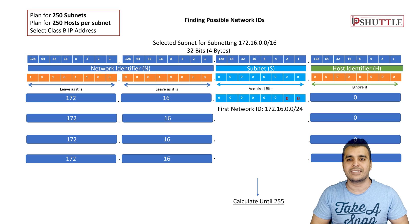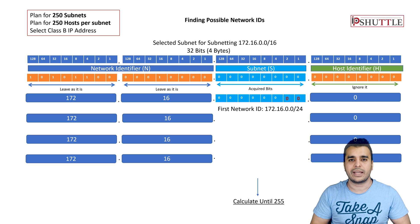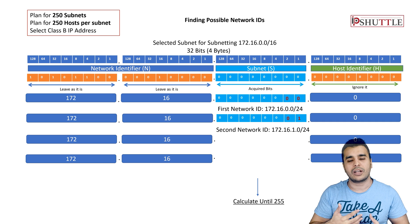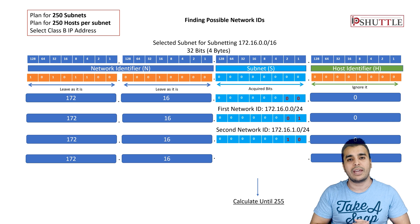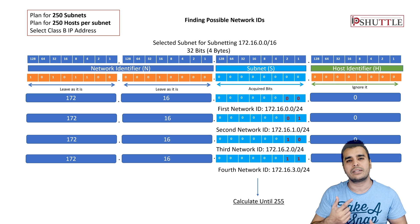The /24 comes from counting all bits that are part of the network identifier: first octet (8 bits), second octet (8 bits), and the third octet (8 bits) — giving /24. For the next ID, we flip the first bit of the third octet to get 172.16.1.0/24. Flipping the second bit gives 172.16.2.0/24. Continuing this process, the final subnet will be 172.16.255.0/24.